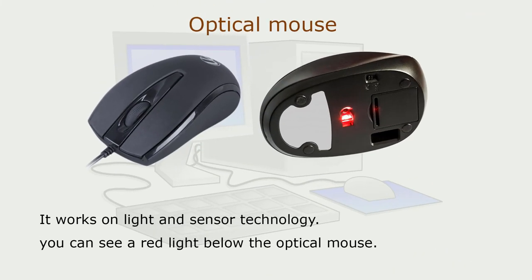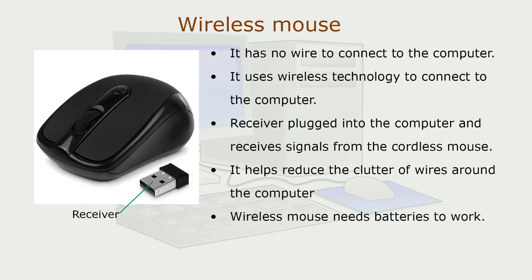Optical Mouse. Nowadays, optical mouse is very popular. It works on light and sensor technology. You can see a red light below the optical mouse. It has no wire to connect to the computer — it uses wireless technology to connect to the computer. A receiver is plugged into the computer and receives signals from the cordless mouse. It helps reduce the clutter of wires around the computer.